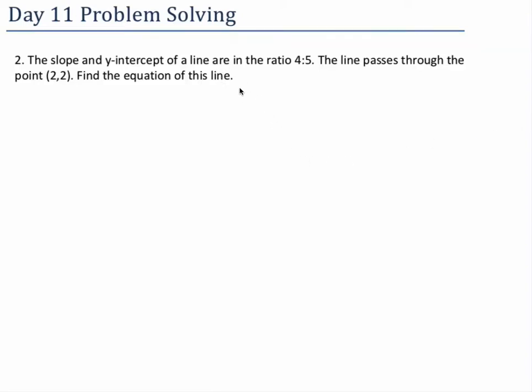Hello, this is Mr. Collier, and today we're doing some problem solving with linear equations. So we've got this first problem, the slope and y-intercept are in the ratio of 4 to 5. The line passes through the point (2,2), find the equation of the line.